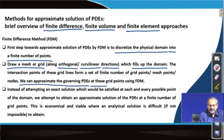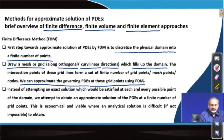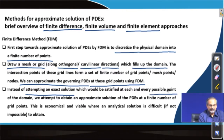We can approximate the governing PDEs at the grid points using the finite difference method. What we essentially do is write down the governing partial differential equations where derivatives are approximated. There could be other methods of approximating partial differential equations where we may be approximating integrals instead of derivatives. However, in the finite difference method we try to approximate derivatives. The important part is that we are not attempting an exact solution, and we would be satisfying the governing partial differential equation only at a select few points rather than at each and every possible point of the domain.